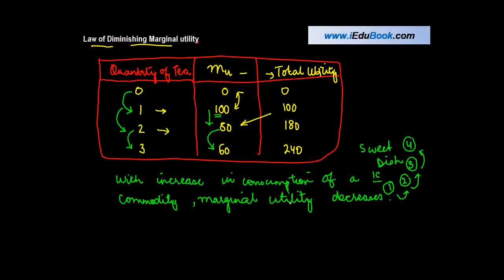With the increase in the consumption of a commodity, marginal utility decreases. But the interesting thing to notice is that even though marginal utility is decreasing, the total utility keeps on increasing. So it increases from 0 to 100, 100 to 180, 180 to 240. So total utility increases.